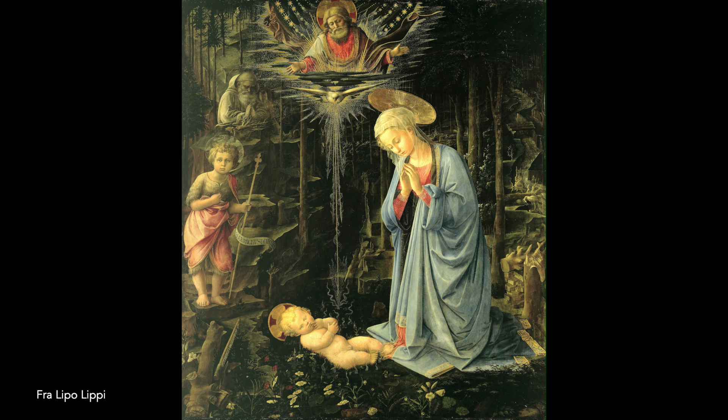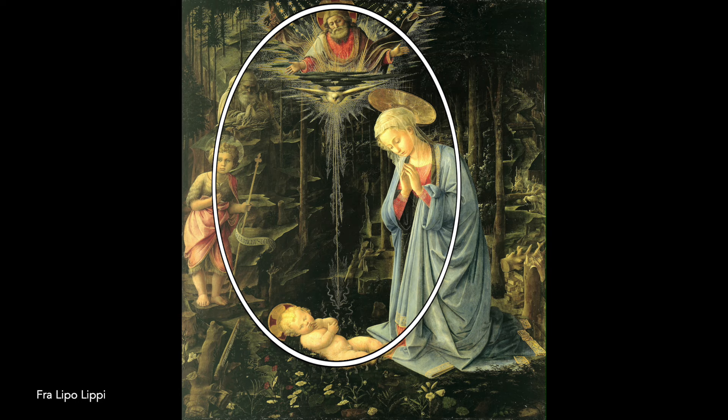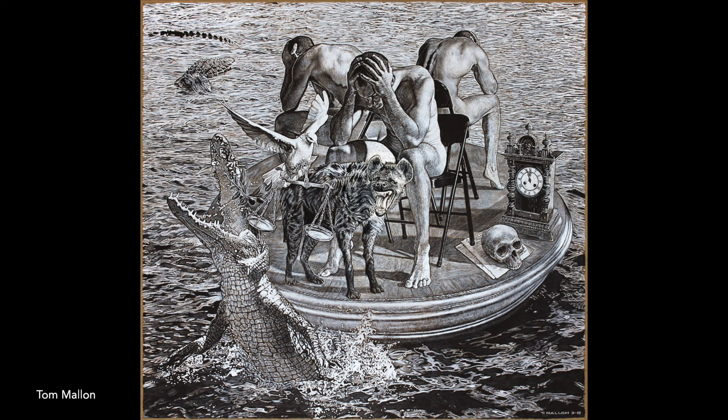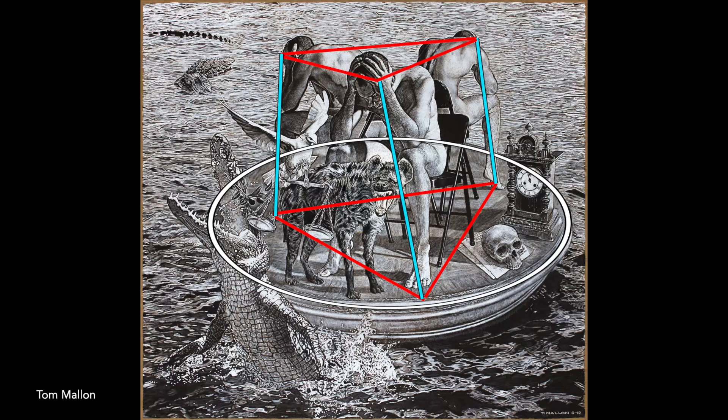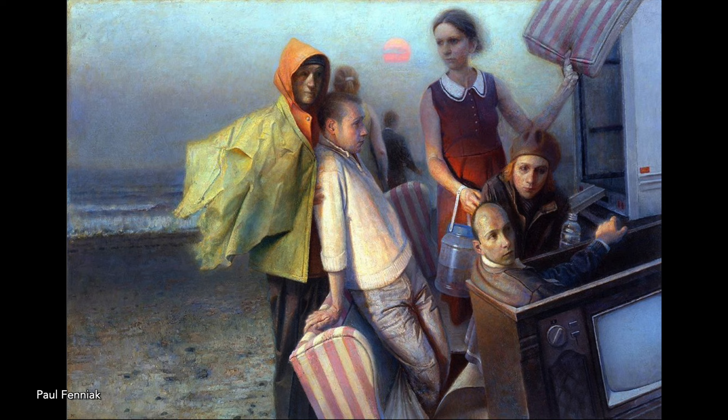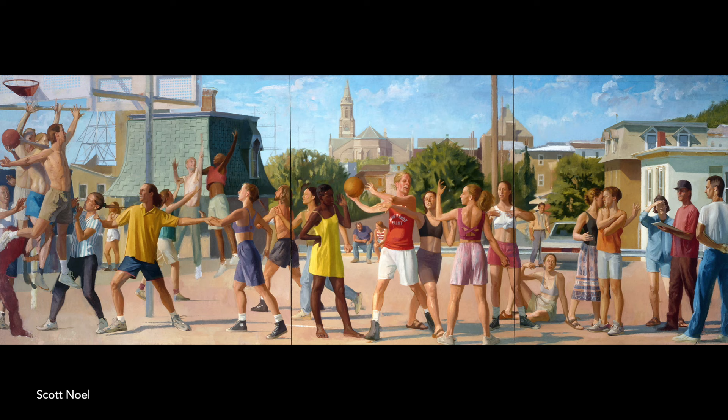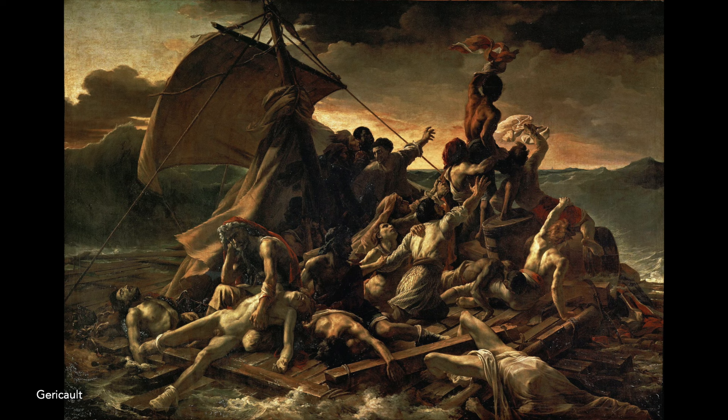Earlier, we saw how artists sometimes group their characters into geometric shapes. Here, Tom Mallon masterfully does that in perspective. The staging and arranging of characters into proxemic groups, their body language, poses, and gestures, and where they look relative to one another are of paramount importance to narrative painters.